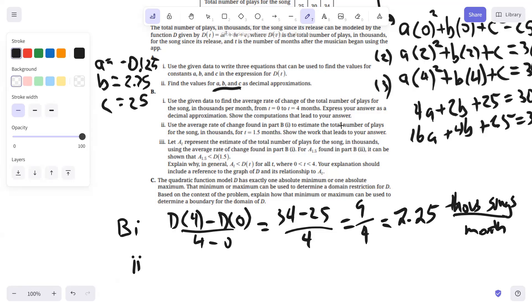The second part of B, use the average rate of change found in Part B1 to estimate the total number of plays for T equals 1.5 months. So what we do is take the initial number of plays, which was 25, plus the average rate of change times the number of months, which would be 1.5. So you would have 28.375 thousand.